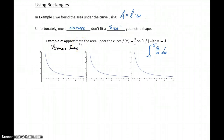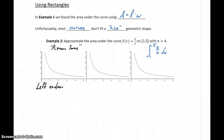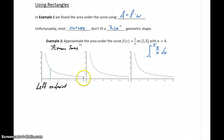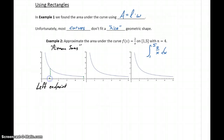This approach of applying rectangular regions is referred to as Riemann sums, named for the mathematician who came up with this idea. We have three different methods: the first is the left endpoint method. We're looking at the interval from 1 to 5.